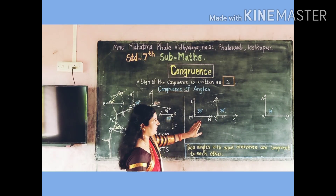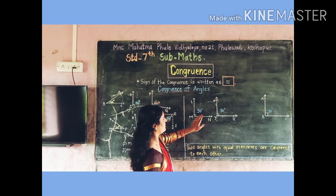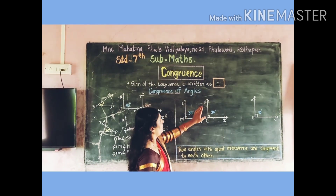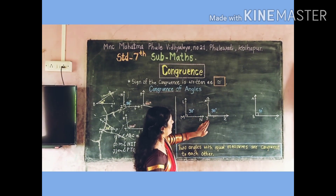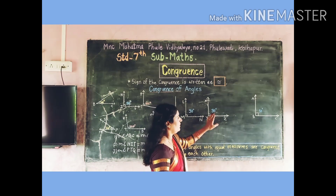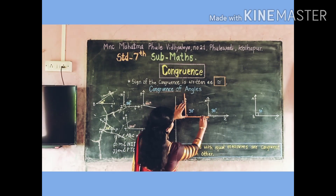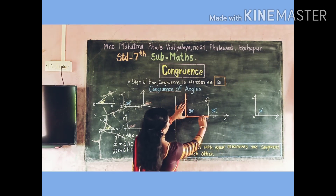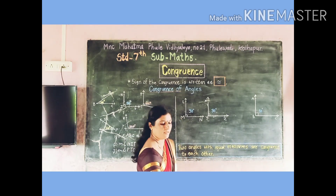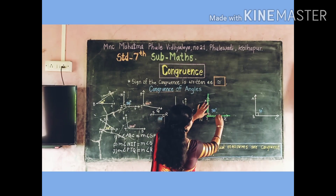Now see these figures. Measurement of angle LMY is equal to 90 degrees. Measurement of angle XYZ is also equal to 90 degrees. Take angle LMY, which is equal to 90 degrees, and take another angle XYZ, which is also equal to 90 degrees.